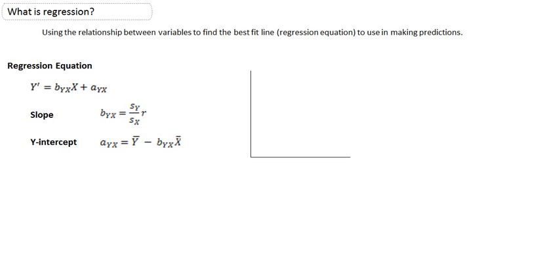We may define this as using the relationship we have between variables, which could also be referred to as the correlation, to find the best fit line or the regression equation that we can use in making predictions.